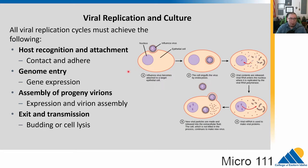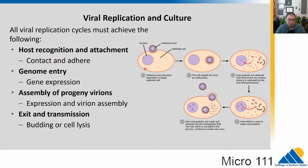Viral replication requires a certain set of steps — this is universal. They have to have some sort of host recognition and attachment. Usually this is binding to cell surface receptors. There are all kinds of proteins on the surfaces of your cells and viruses can bind to and trick those receptors.